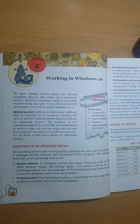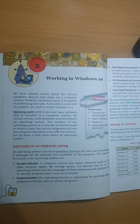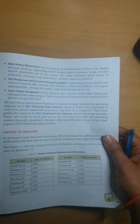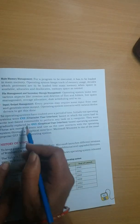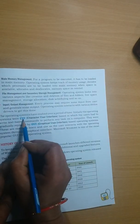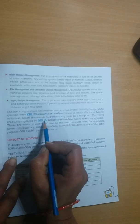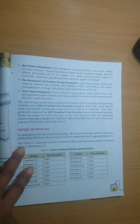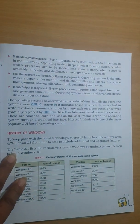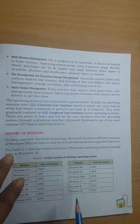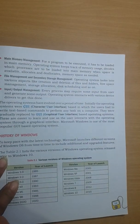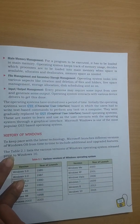According to the type of instructions and the way we give instructions to the computer, operating systems are of two types. The first one is CUI — Character User Interface — and the other is GUI — Graphical User Interface. In CUI, the user has to write text-based commands to perform tasks on the computer.